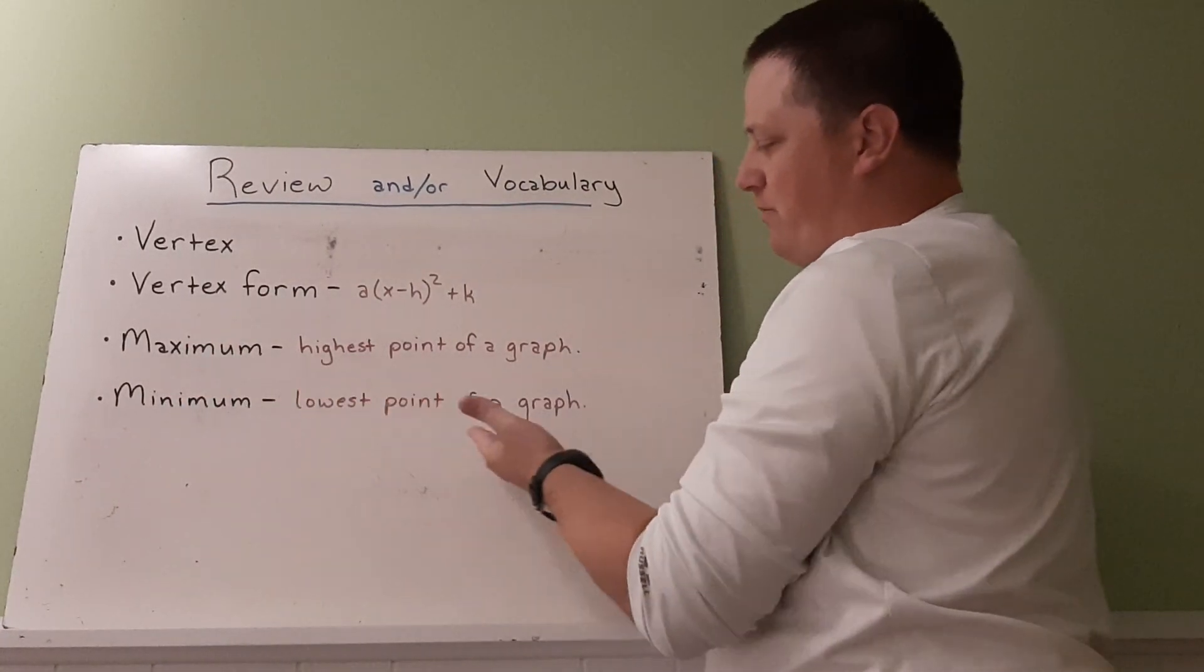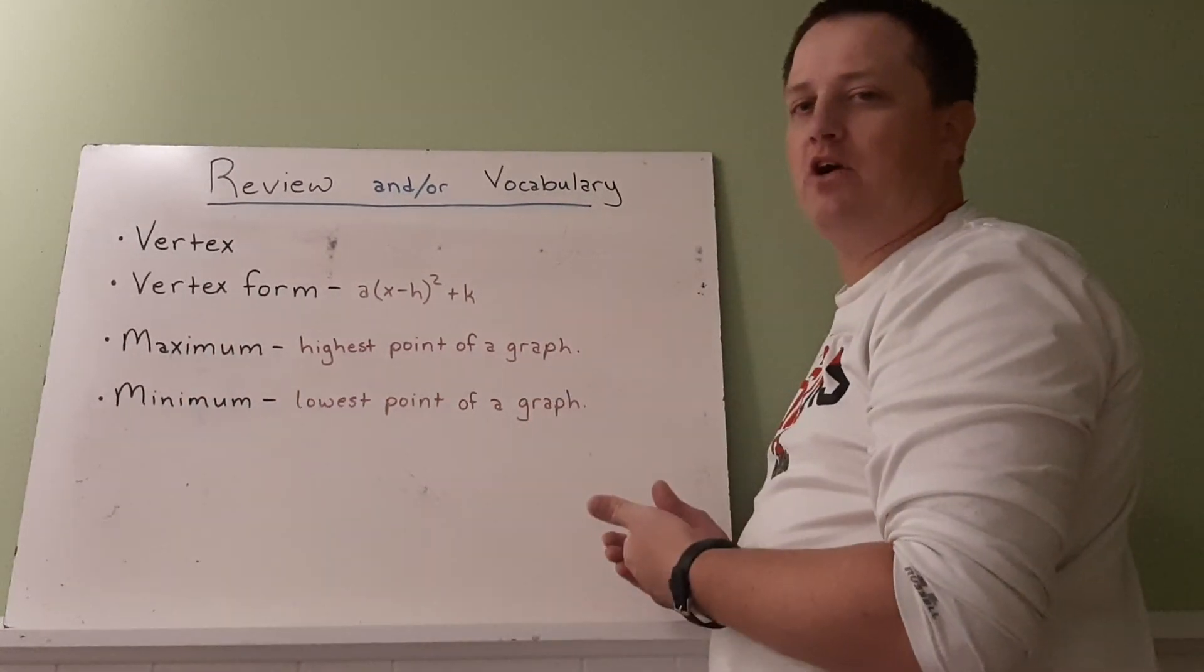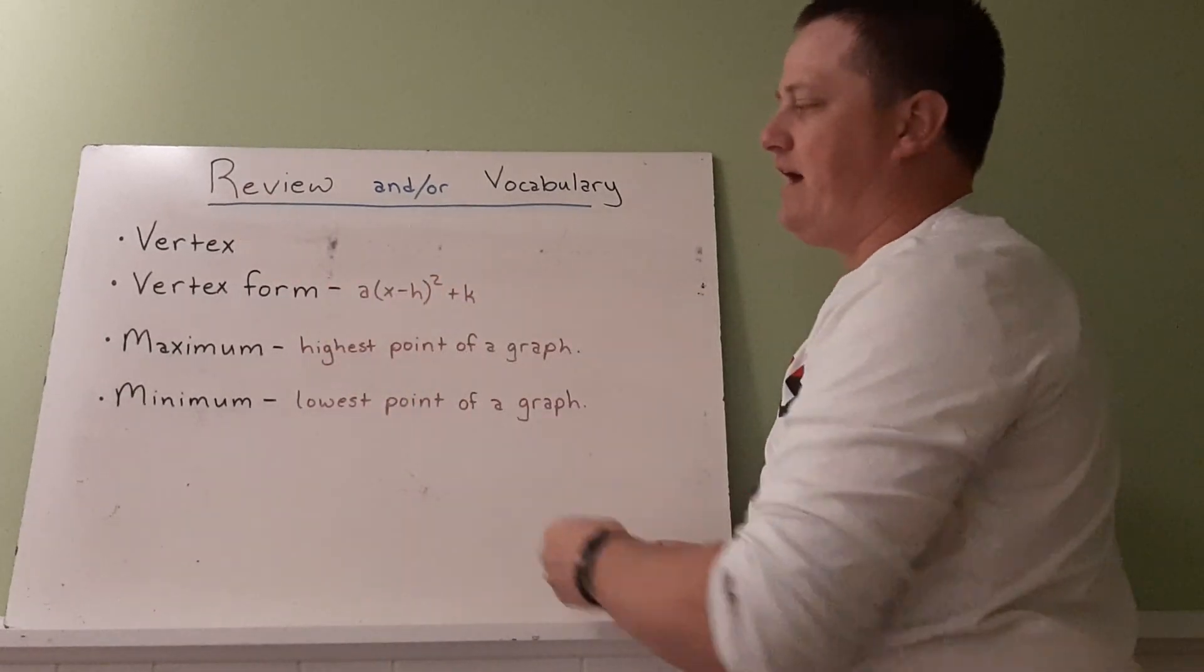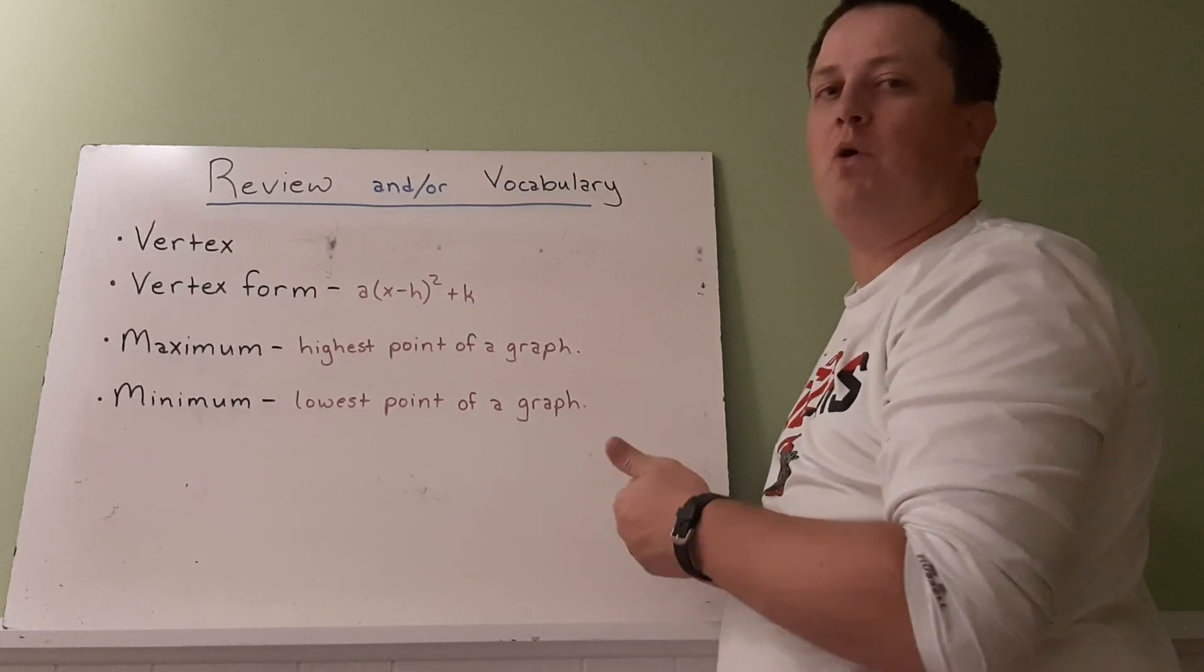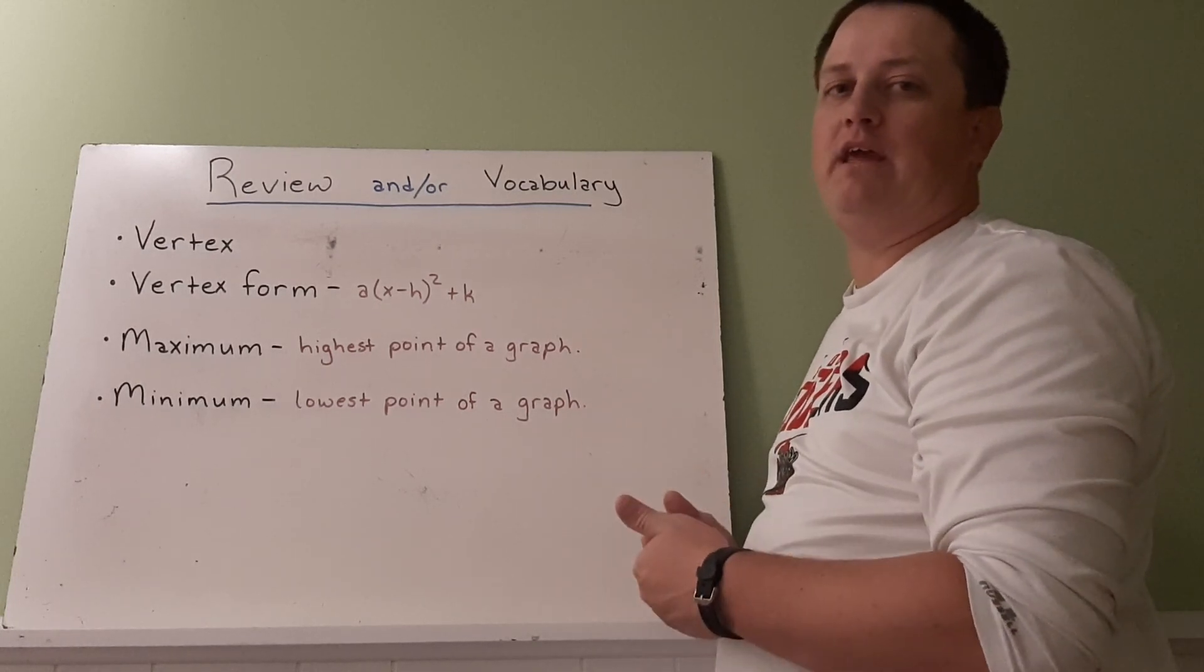And the minimum, the lowest point of a graph. And then in other quadratics, this is the vertex. So we have two possible things that the vertex could be. It could either be a maximum or a minimum based off of the equation.